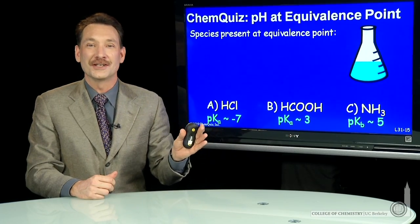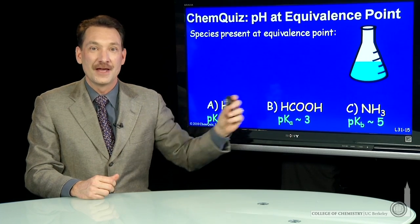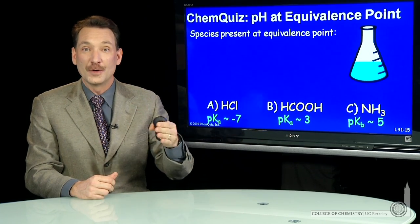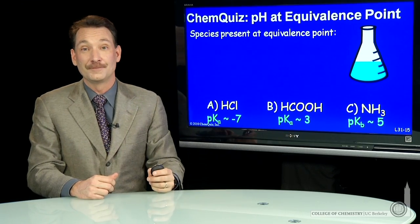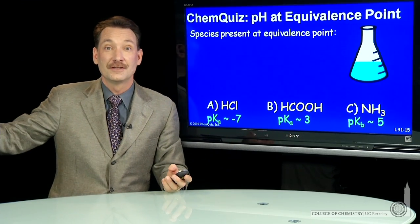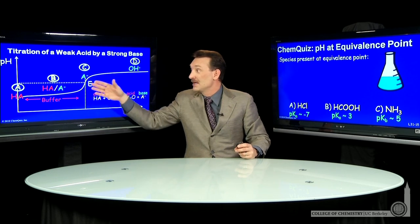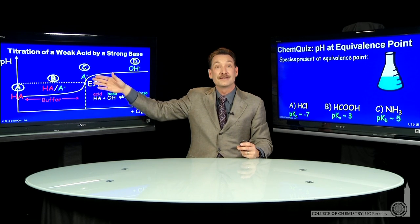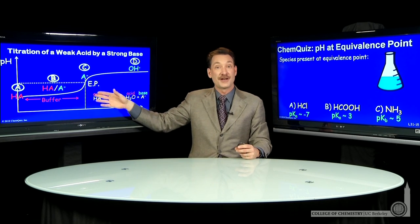We're looking at the titration of some weak acid and base solutions. Now, when you titrate a weak acid or a weak base with a strong base or a strong acid, the titration curve looks something like this. We have the acid being converted to its conjugate base. Now, if this were a base, it would be a base being converted to its conjugate acid.